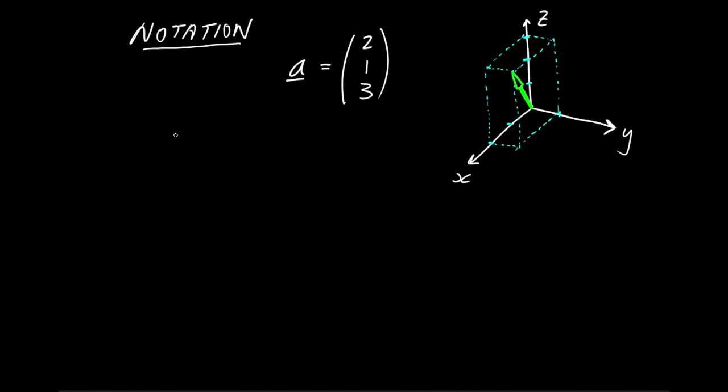Other people may use other notations. For example, a line over the symbol A is commonly used. When people write out the components, they may choose to do it as a row like this or even using pointy brackets like this. Now, all these notations are basically getting at the same thing. But within this course of videos, we're just going to use the notation that I've introduced above.